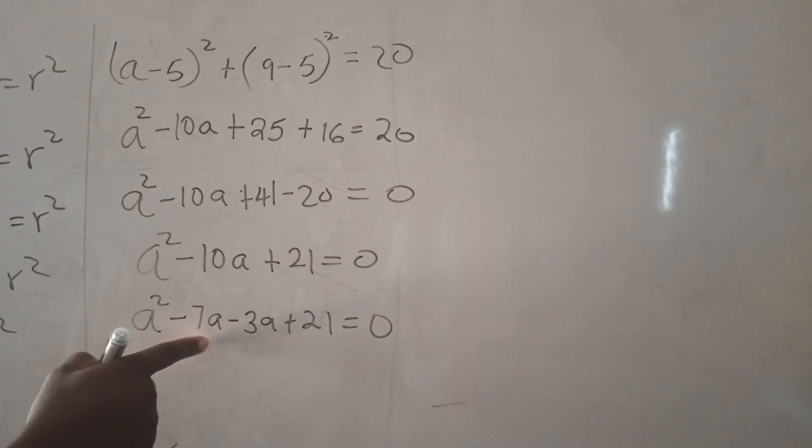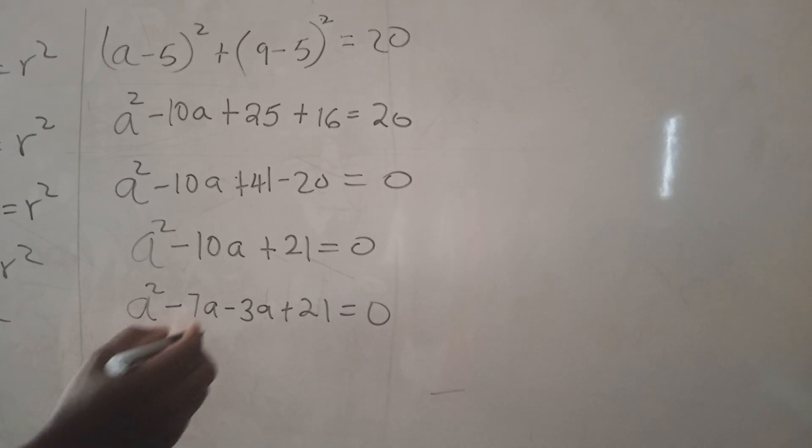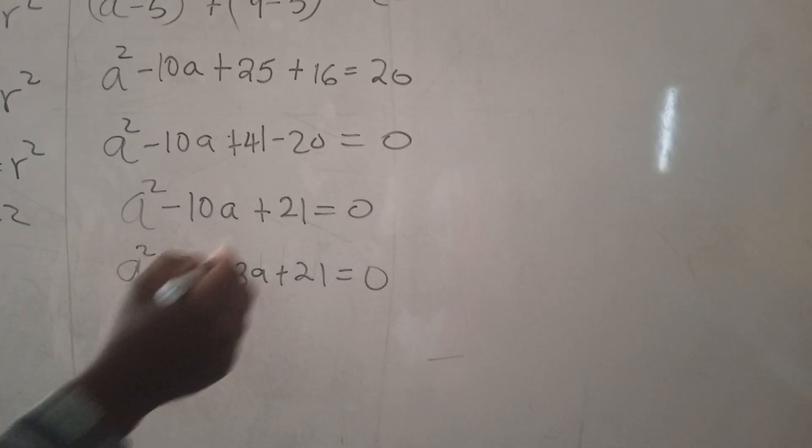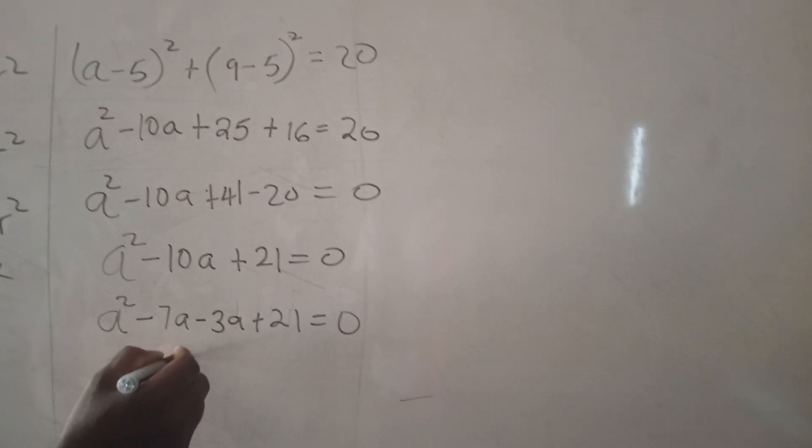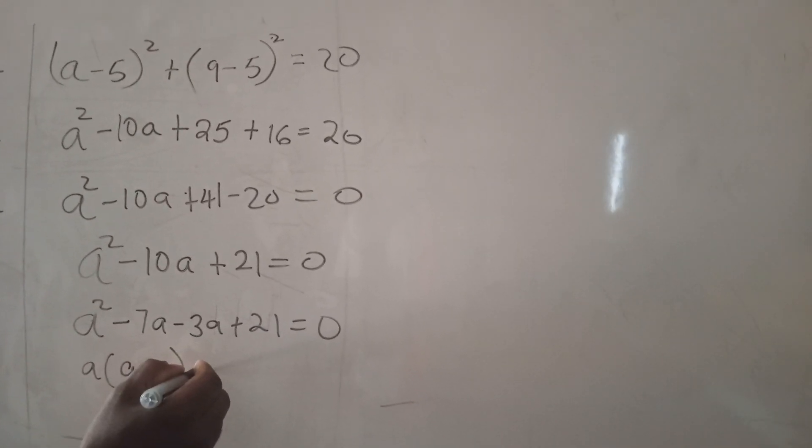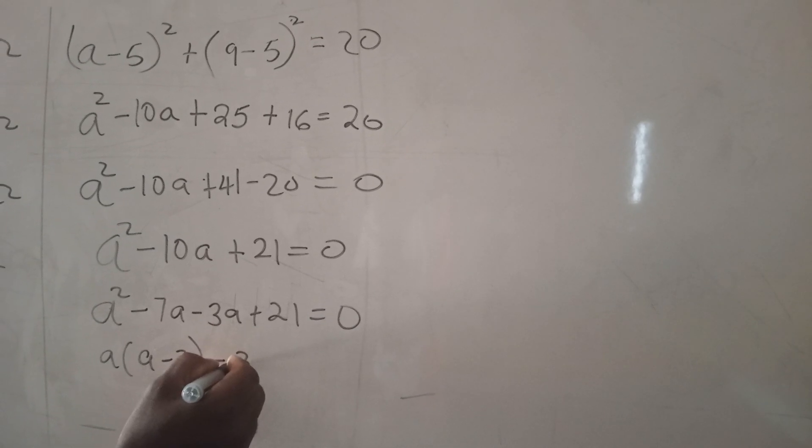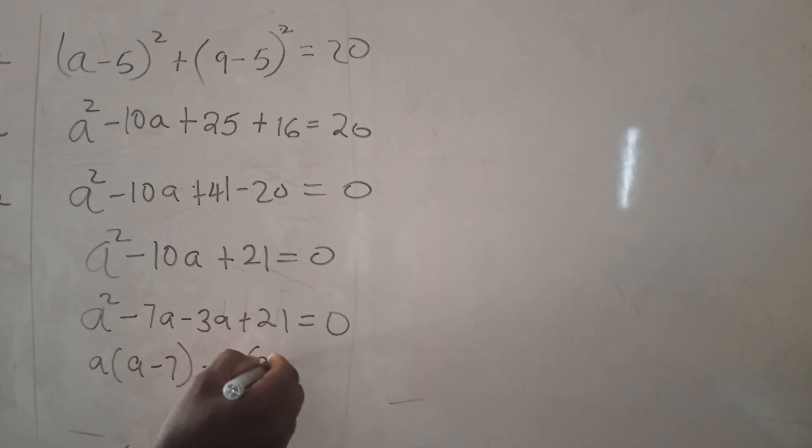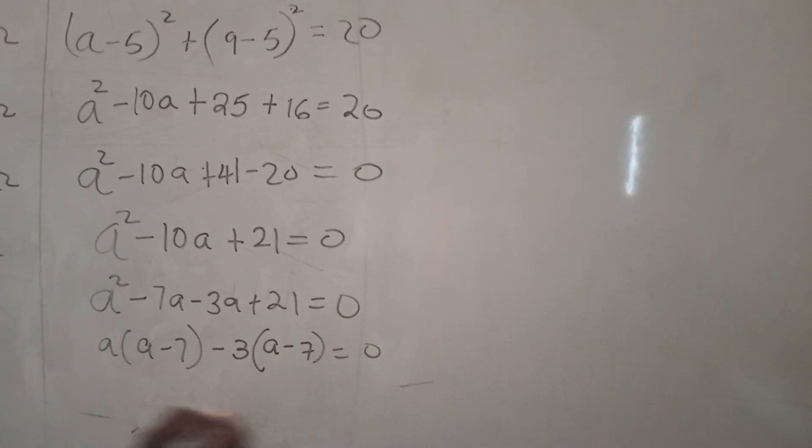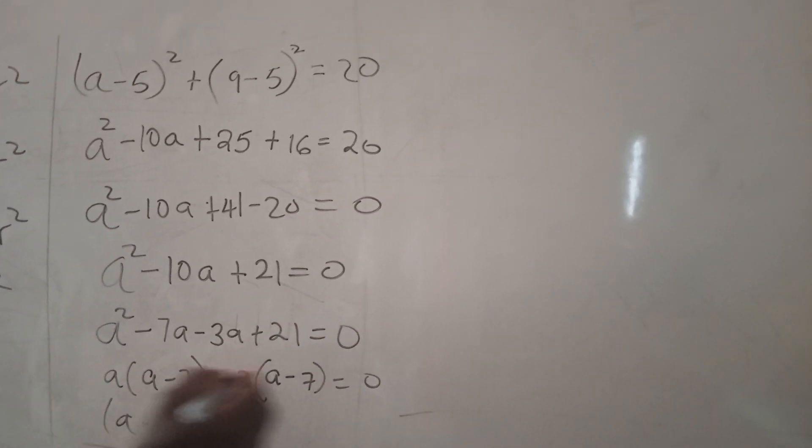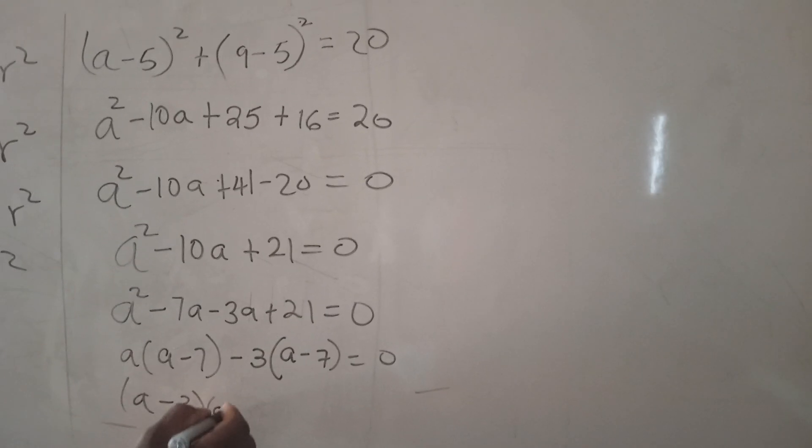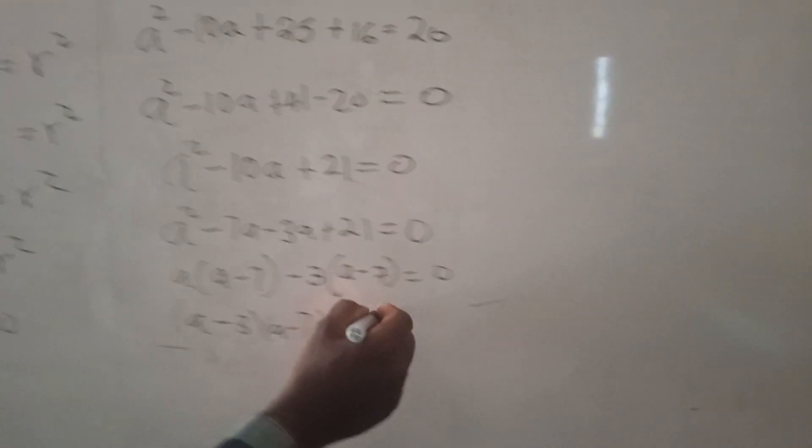Now let's factorize. We are going to group this and this. We are going to factorize out a into (a - 7), and here we are going to factorize out 3 into (a - 7) = 0. So it's going to be (a - 3)(a - 7) = 0.